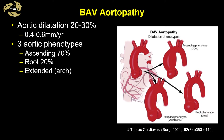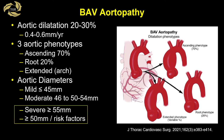Aortic dilatation may occur in 20 to 30% of patients with bicuspid aortic valve. Aortic expansion occurs at a rate of approximately 0.4 to 0.6 millimeters per year and is age dependent. The consensus paper describes three aortic phenotypes: one, ascending at 70%; root at 20%; and three, extended to involve the arch. The size of the aorta can be described as mild, moderate, or severe. Patients with severe dilatation greater than 55 millimeters and those with more than 50 millimeters and risk factors should be considered for surgery.